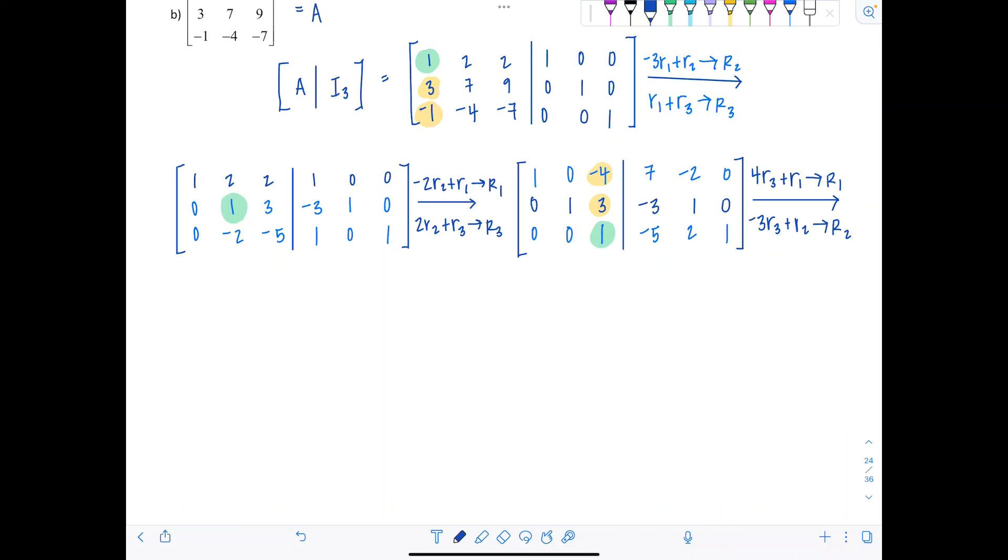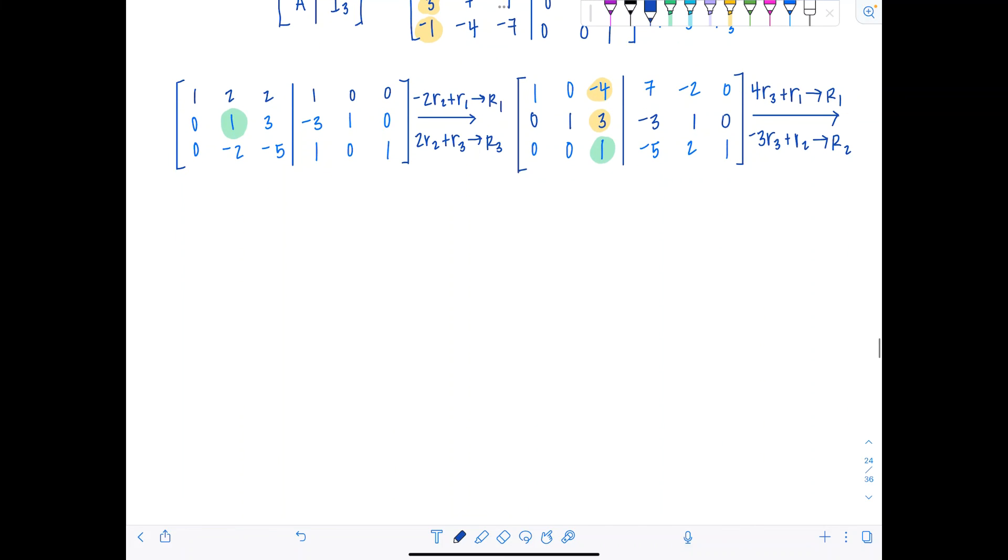Why don't you guys pause the video? Make sure you could do this part successfully and then check back in. So let's go over our work together. Row three didn't change. So I like to write it first. Zero, zero, one, negative five, two, one. That's the same. And then our new row one and row two. Make sure you got the same thing. So one, zero, zero. This should be negative 13, six, four. Zero, one, zero. 12, negative five, negative three. How'd you do? Good.